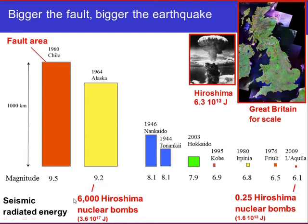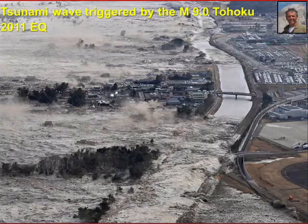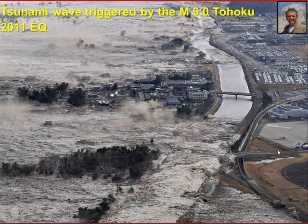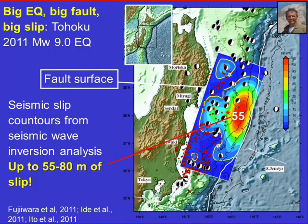Going to larger earthquakes, seismic radiation energy can be equivalent to about 6,000 nuclear bombs for a magnitude 9+ earthquake. The most recent large earthquake was the 2011 Tohoku earthquake, magnitude 9.0, which I will discuss later, including some models we did recently. This is the tsunami wave triggered by that earthquake, seen flooding Sendai Airport. Tsunamis, especially large ones, are associated with big mega-thrust earthquakes.